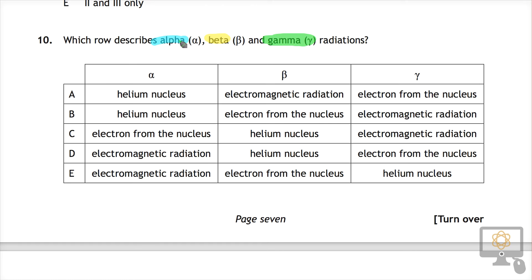So which row describes alpha, beta, and gamma? Alpha is a helium nucleus. It's got two protons and two neutrons in its nucleus, and so therefore the answer has to be A or B.